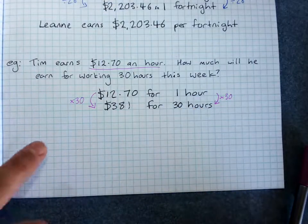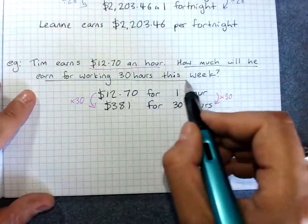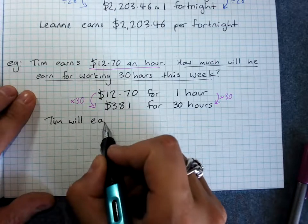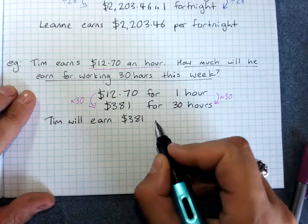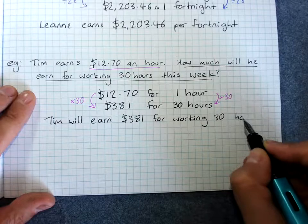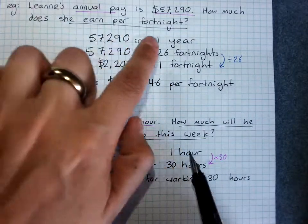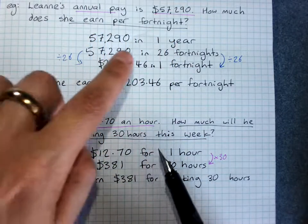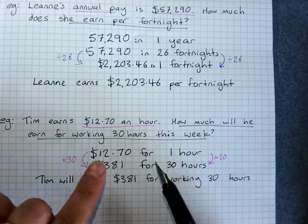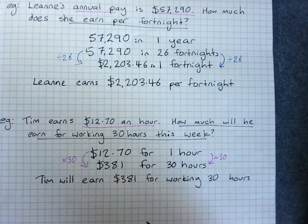So Tim earns $381 for 30 hours. Remember the question was: how much will he earn for working 30 hours this week? Tim will earn $381 for working 30 hours. The steps are: write down what you know about the pay rate, work out whether you need to change units or stay the same, then work out what you want to know and whether to times or divide to get there.